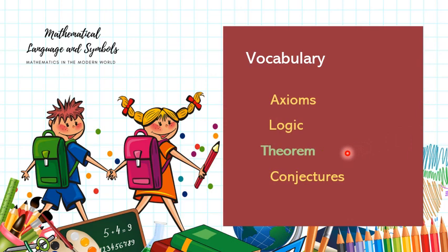Next is theorem. A general proposition, not self-evident unlike axiom, but proved by a chain of reasoning, a truth established by means of accepted truth. So if after plenty of proving, you come up with a final conclusion, that can be a theorem. Not self-evident. You need to prove it first, and when it is proved, it now becomes a theorem.